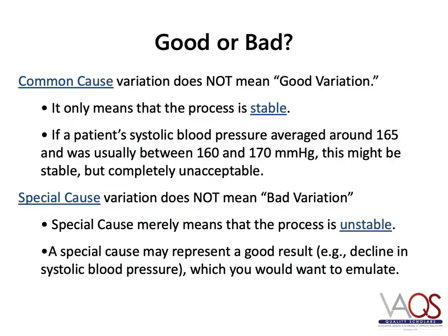One question we often get from individuals new to healthcare improvement is whether common cause or special cause variation should be considered good or bad variation. The answer is that it depends. Common cause variation means that the performance of the system is stable — but stable does not mean desirable. Imagine a patient with a systolic blood pressure that ranges between 160 and 170; just because it is stable does not mean it is acceptable. Special cause variation means performance is unstable, but this may be a good thing. If your patient has started a new blood pressure medication and now consistently has a systolic blood pressure between 120 and 130, this special cause variation is desirable, and you would want to continue that medication.